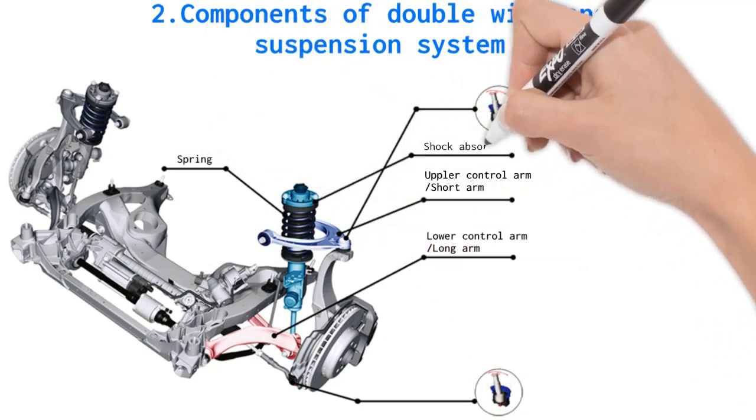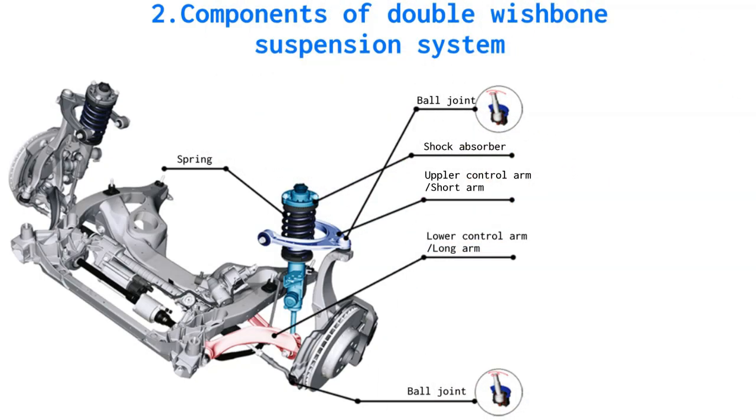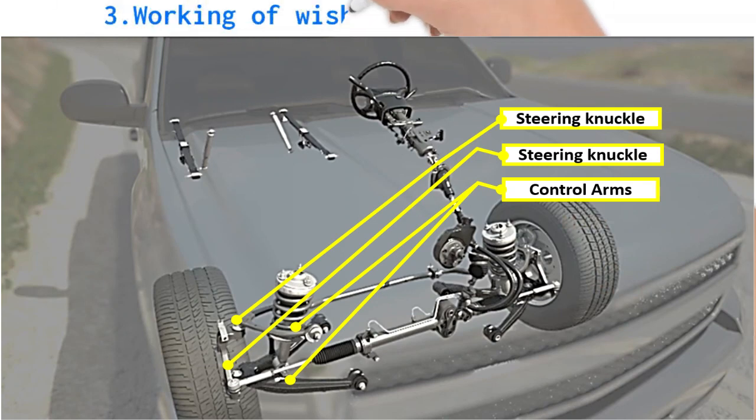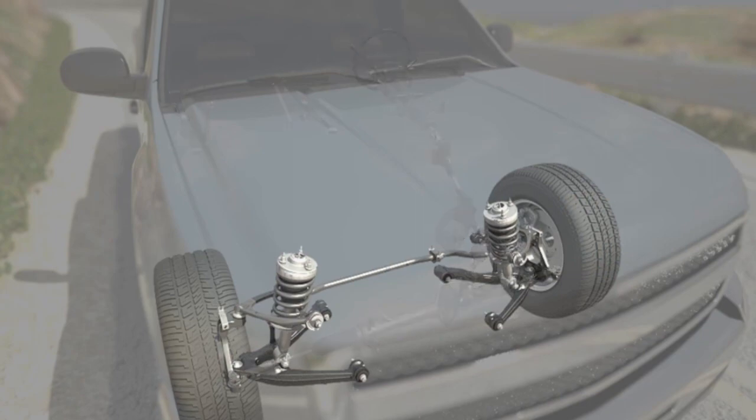Working of double wishbone suspension system: Front wheels of the vehicle are connected to the frame by upper and lower control arms. This attachment allows vehicles to swivel up and down.